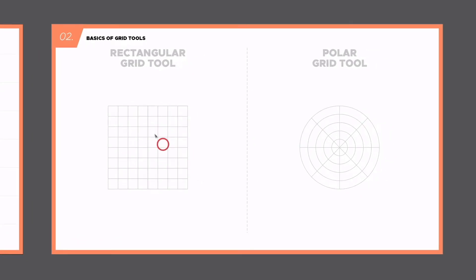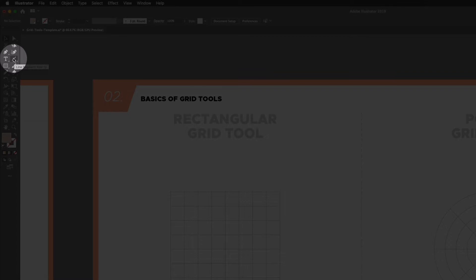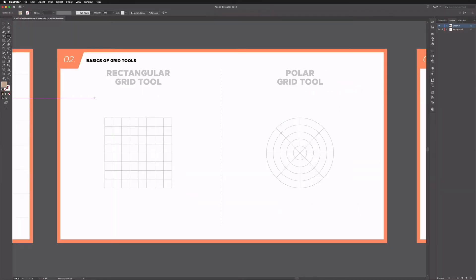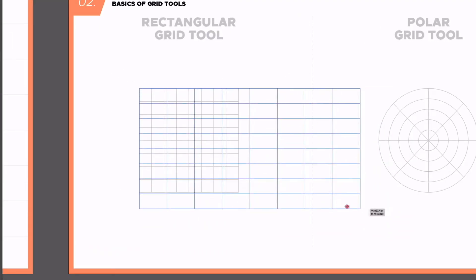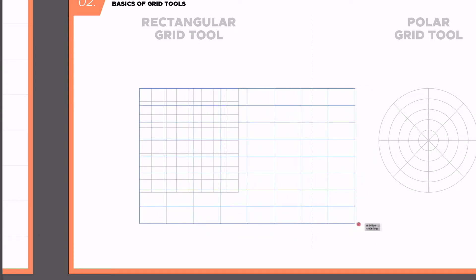On our second artboard we have some guides for the use of each of these tools. They can be found in the left hand toolbar sitting under the line segment tool. If I click and hold on the line segment tool, at the bottom we have two options: the rectangular grid tool and the polar grid tool. I'll select the rectangular grid tool to begin with — this works in the same way as our shape tools, so I can simply click and drag and I'm getting a kind of grid of rectangles.